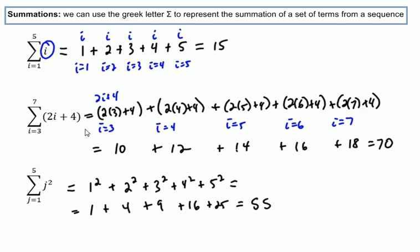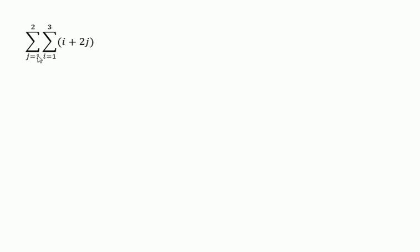So essentially, once you get the hang of this and understand what this notation means, you just write out all of the terms as i or j or whatever your summation variable is from start to finish. Calculate that expression for each of the terms and then add them all up. Now, there may be cases where we have something like this, a double summation.